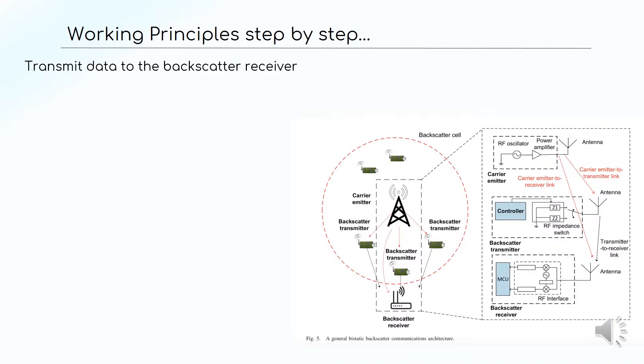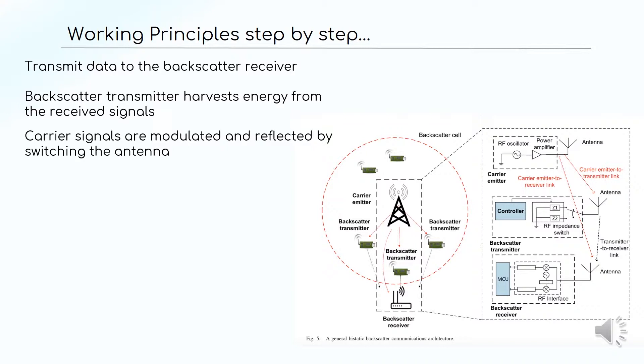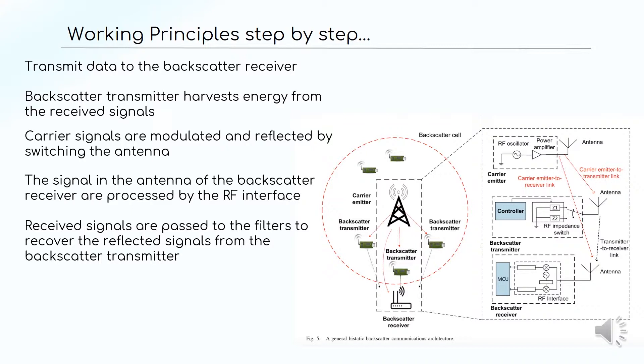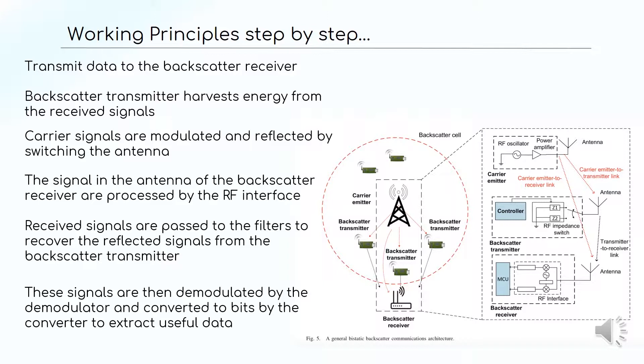The working principle is as follows: transmit data to the backscatter receiver; the backscatter transmitter harvests energy from the received signals; carrier signals are modulated and reflected by switching the antenna; the signals in the antenna of the backscatter receiver are processed by the RF interface; received signals are passed to the filters to recover the reflected signals from the backscatter transmitter; these signals are then demodulated and converted to bits by the converter to extract useful data.